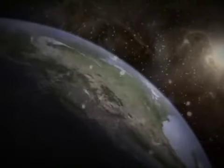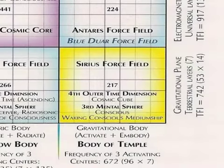The sum of every code and command is housed in the fourth outer time dimension, Cosmic Cube, channeled through conscious waking mediumship. The Cosmic Cube channel is located in the Sirius Force Field.